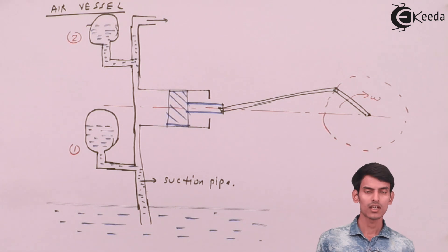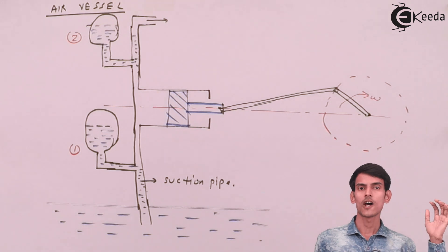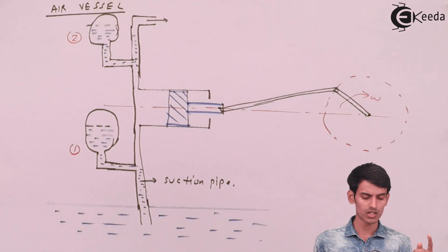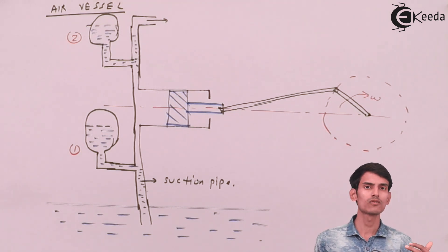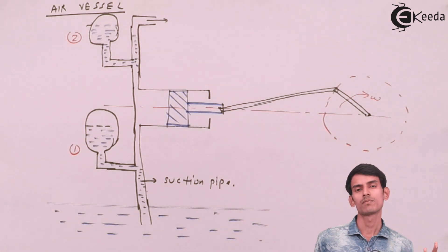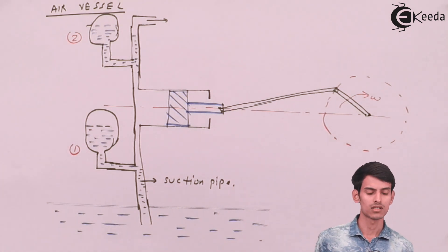Now suppose in case the pressure fluctuations happen, the compressed air now pushes the water and forces it to flow into the pump. So these fluctuations are absorbed by the air vessel.